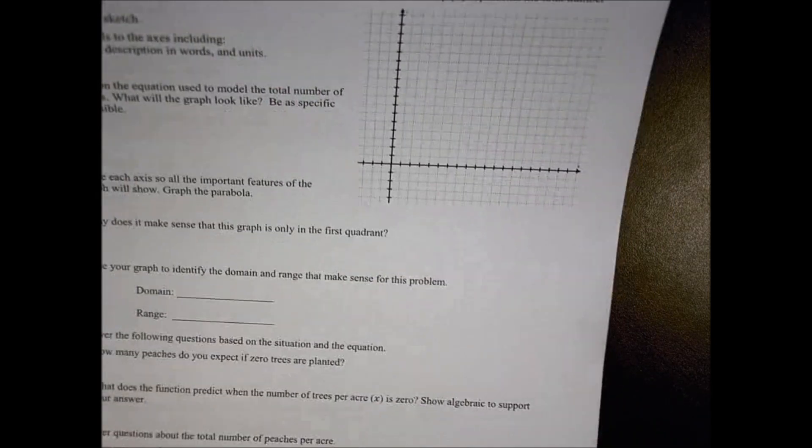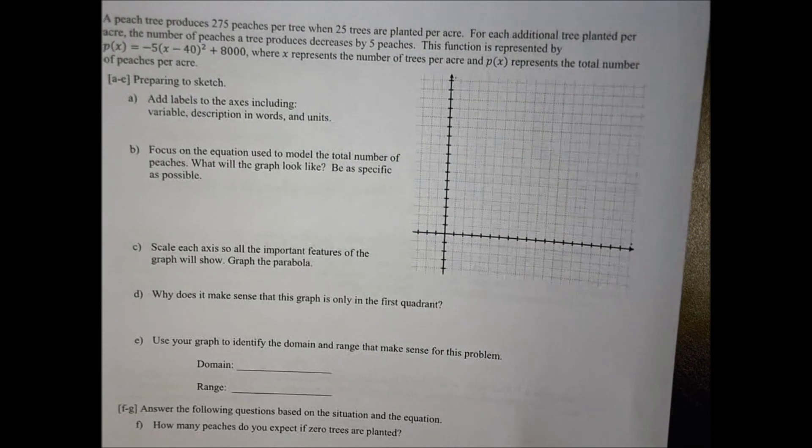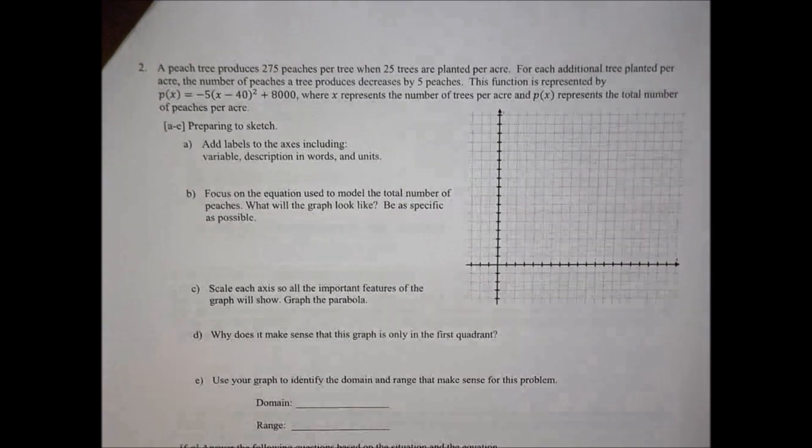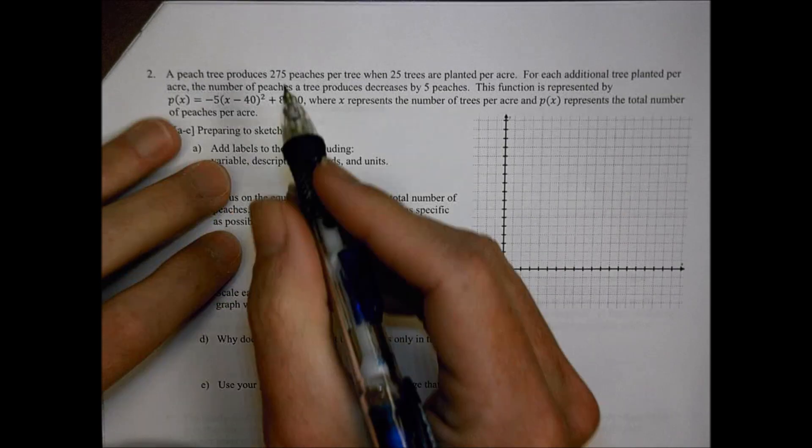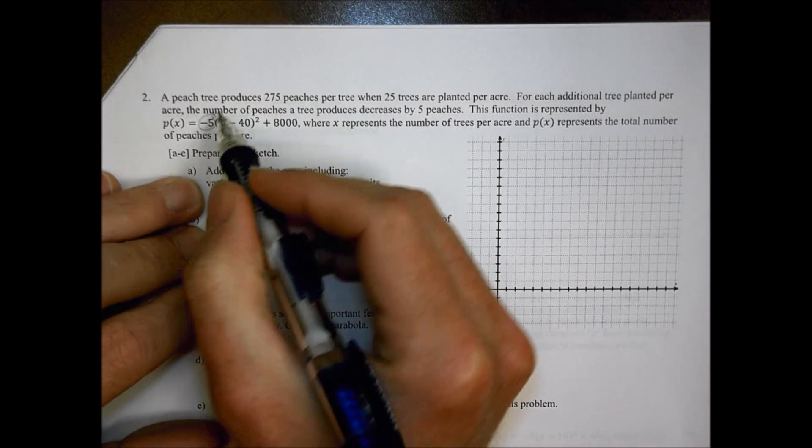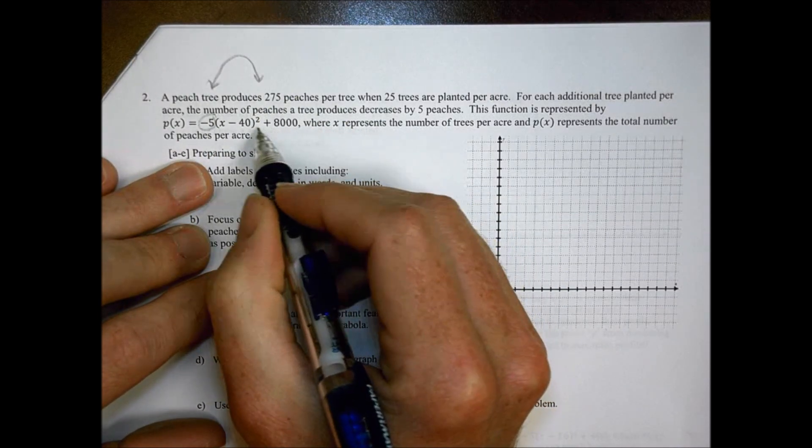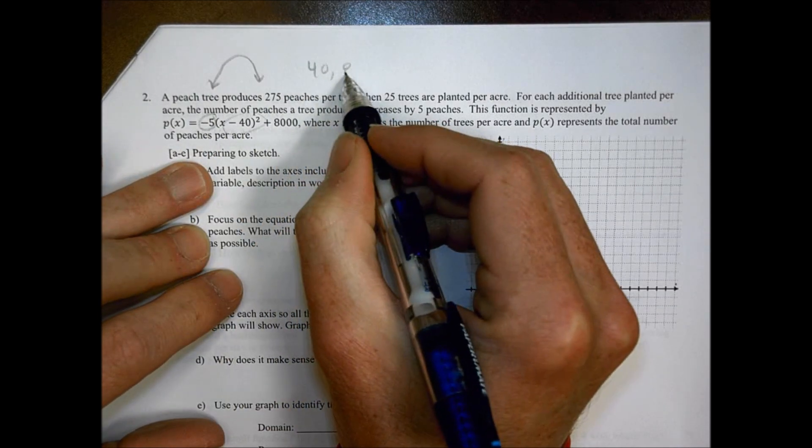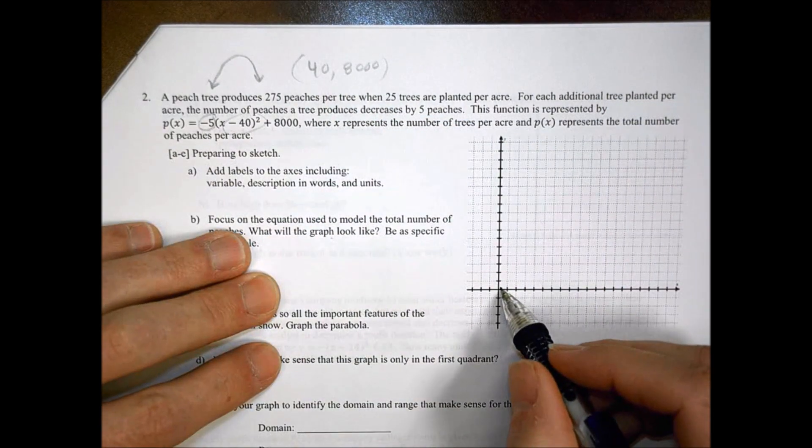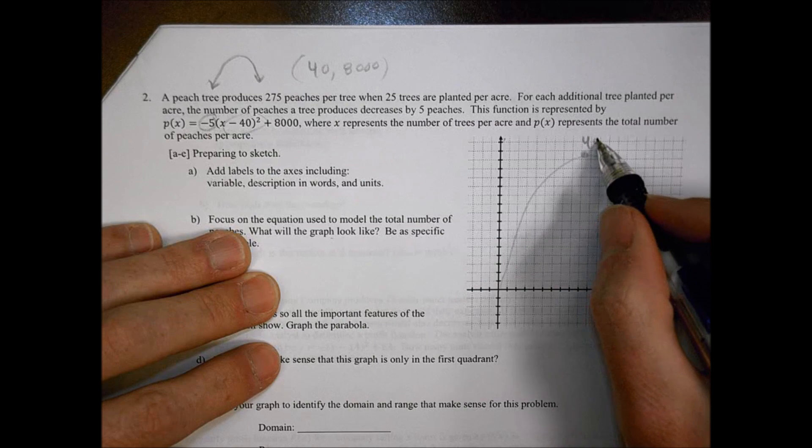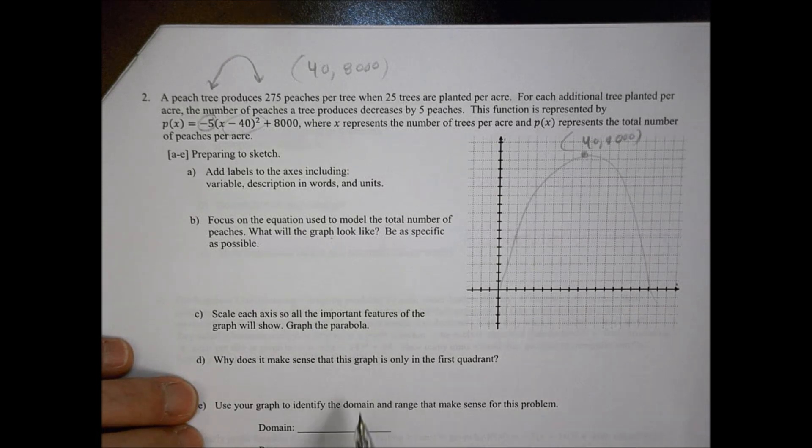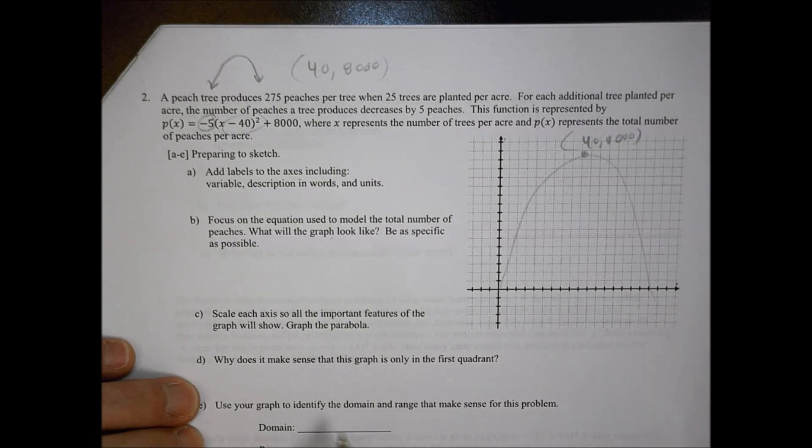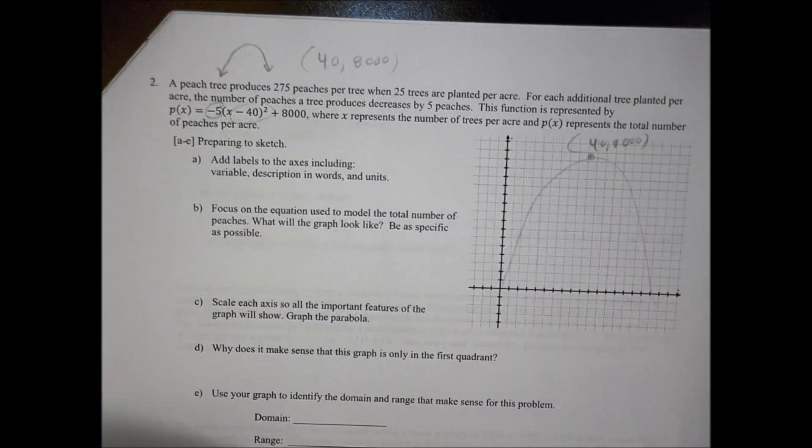In the next problem you have another word problem. I'm going to let you do that on your own and ask questions if you need to. It's another story problem about peaches and a tree. The idea is maximums and minimums. We can see this has a negative value there, so we're going to be curving up and down like that. We can see we have a vertex at 40 comma 8,000.